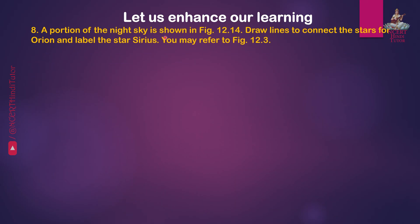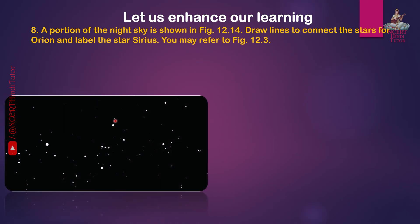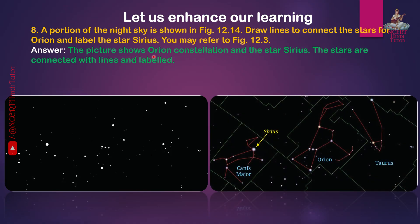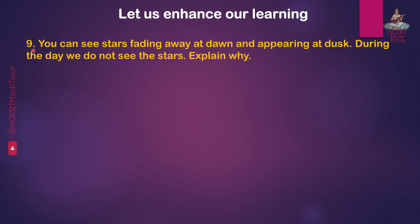Question 8: A portion of the night sky is shown in figure 12.14. Draw lines to connect the stars for Orion and label the star Sirius. You may refer to figure 12.3 for help. Answer: The picture shows the Orion constellation and the star Sirius. This is figure 12.3 — this is Sirius, this is Orion, this is Canis Major, and this is Taurus. Draw lines to connect the stars for Orion and label the star Sirius.